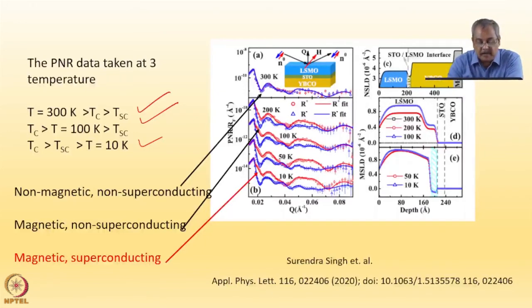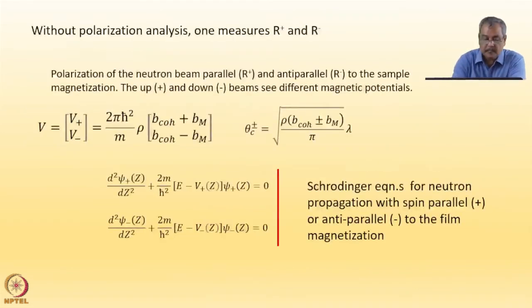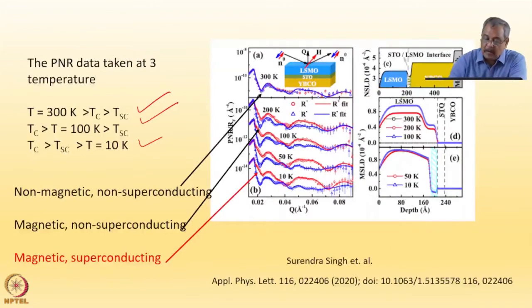It's a combination of superconductor, insulator, and magnetic material. Polarized neutron reflectometry data was taken at three temperatures and these are three zones. First, room temperature data.